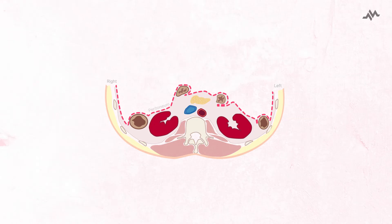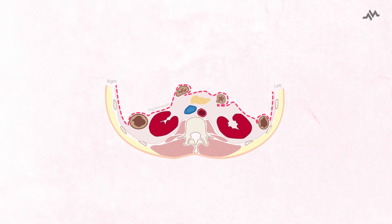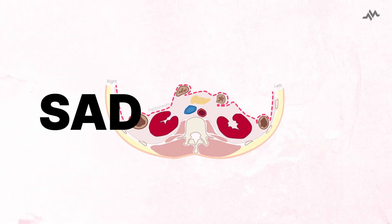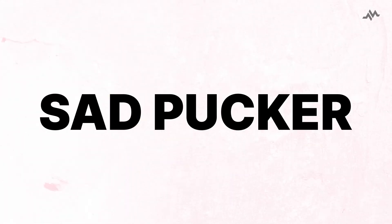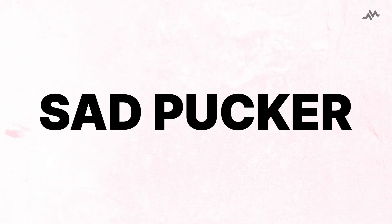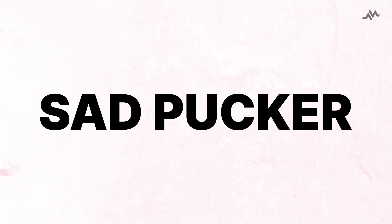You can remember the organs within the retroperitoneal space by remembering the phrase "sad pucker," where each letter represents one or more of the organs located within the retroperitoneal cavity.